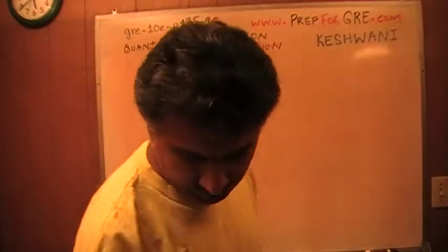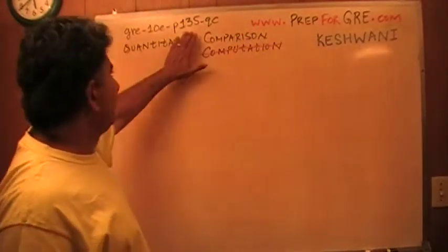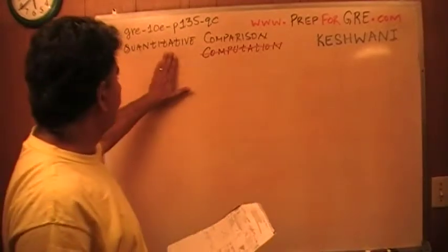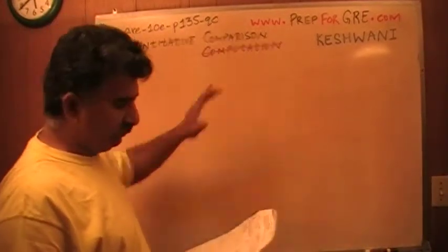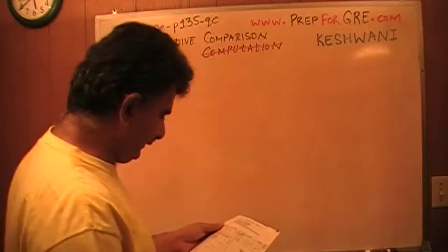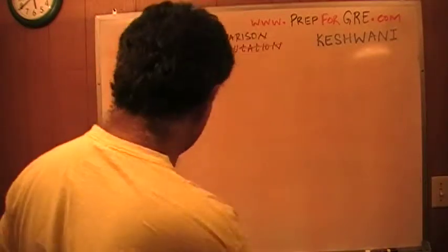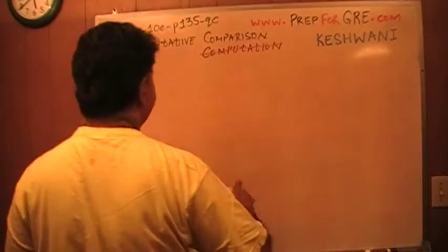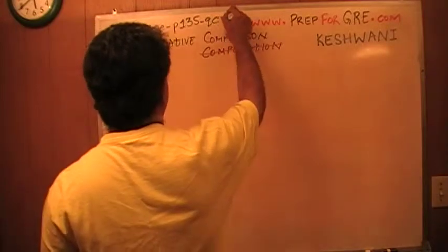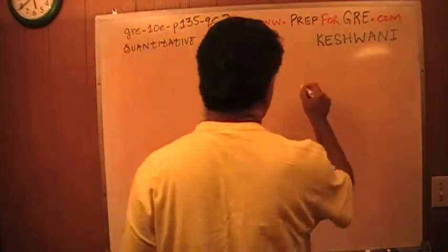The problem I'm going to solve is on page 135. It is a quantitative comparison question, hence the QC notation, and it's question number seven. Let's take a look. Let me draw the picture here.